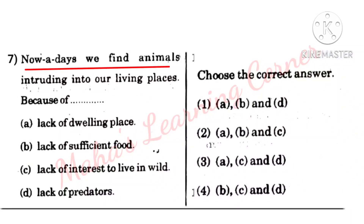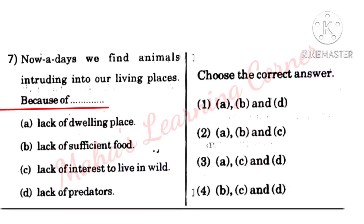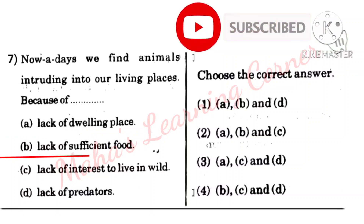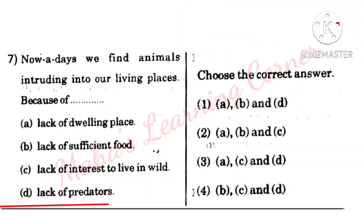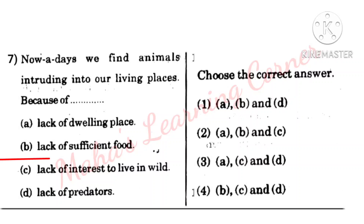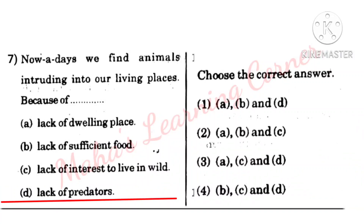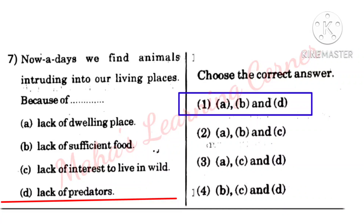Nowadays we find animals intruding into our living places. Options: lack of dwelling place, lack of sufficient food, lack of interest to live in wild, lack of predators. The correct answer includes A, B and D — lack of dwelling place, lack of sufficient food, and lack of predators.